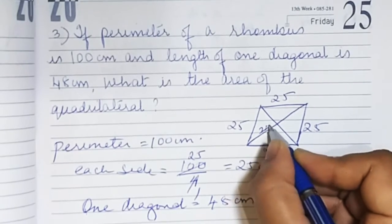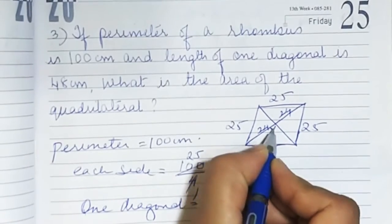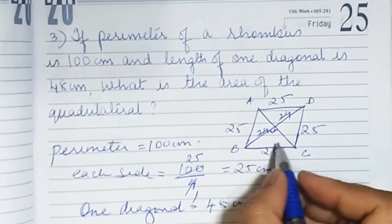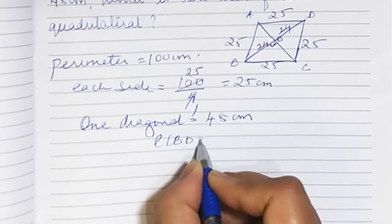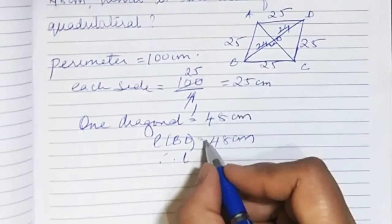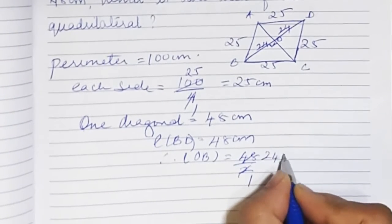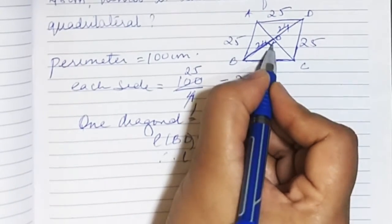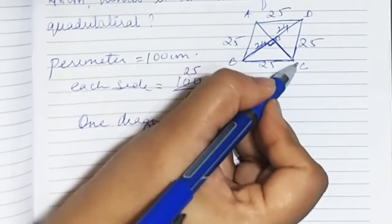Since the diagonal is 48, half of it is 24, so we have 24 and 24. The angle at the centre is 90 degrees. We label the vertices A, B, C, D and the centre O. Length BD is 48 centimetres, therefore length OB is half of 48, which is 24 centimetres. We now have sides of 24 and 25 with a 90-degree angle, so we use Pythagoras theorem to find the other side.